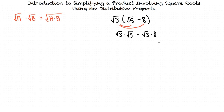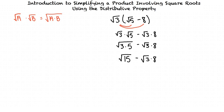Remembering the property mentioned earlier, the square root of 3 times the square root of 5 becomes the square root of 3 times 5. Since 3 times 5 is 15, we get the square root of 15. Negative square root of 3 times 8 can be rewritten as negative 8 square root of 3, leaving us with the square root of 15 minus 8 square root of 3. Note that the square root of 15 is in simplified radical form because 15 has no perfect square factors other than 1.